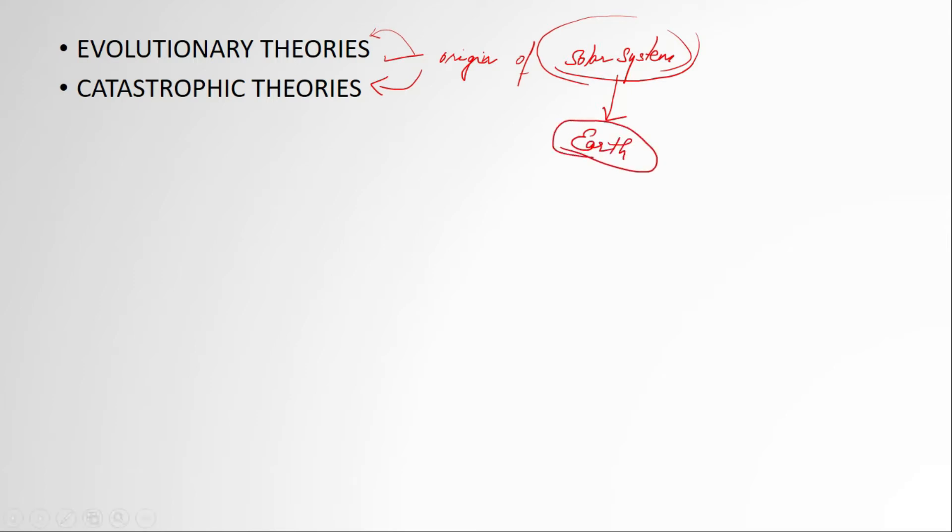Hence, when you talk about the origin of the Earth, it's actually basically the origin of solar system. In general, the theories of origin of the solar system can be divided into two groups: the evolutionary theories and the catastrophic theories.